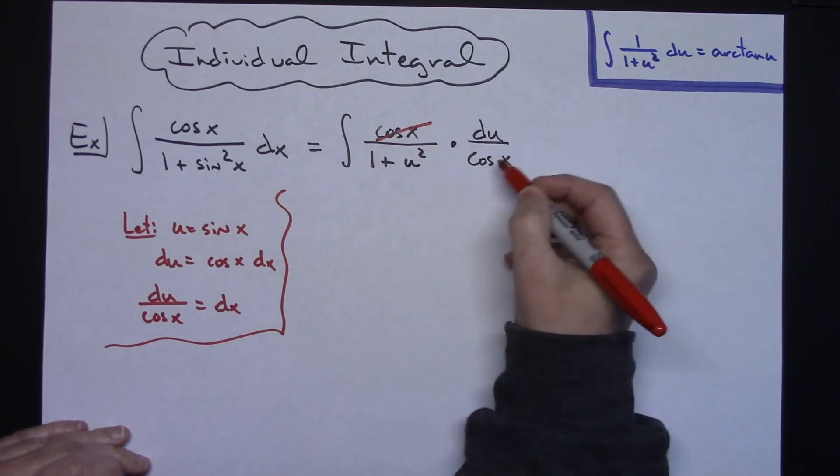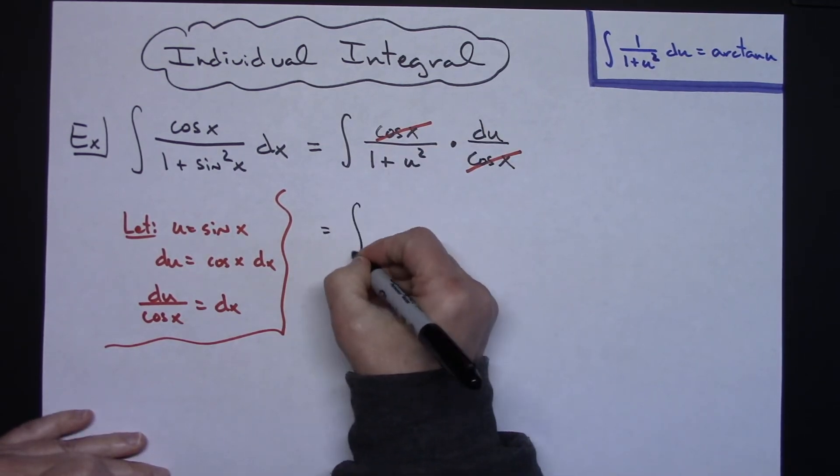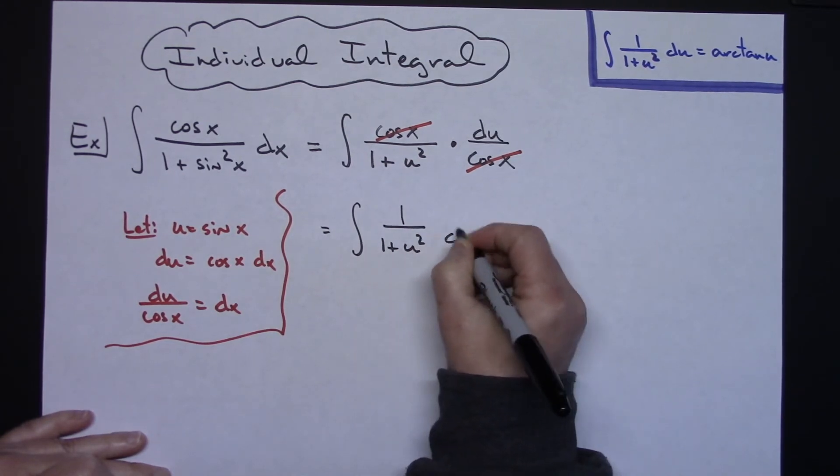That's going to allow me to cross out those cosine x's, which will leave me with the integral of 1 over 1 plus u squared du.